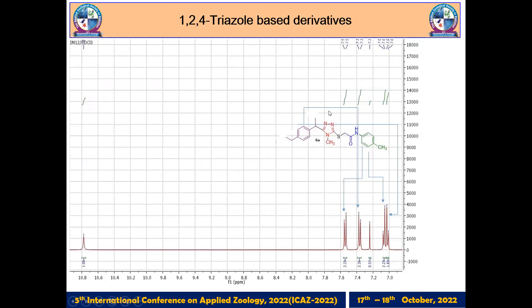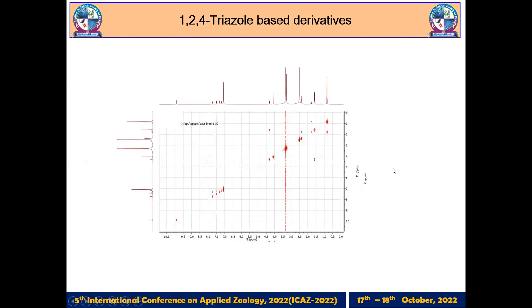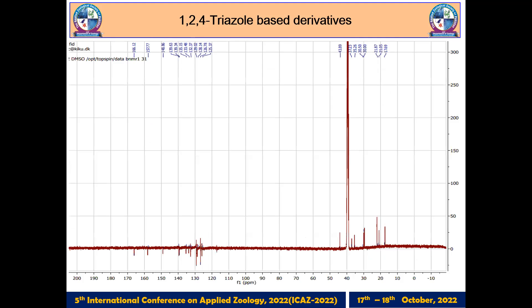Formation of the compounds was confirmed by their spectral data analysis. This is the proton NMR of the compound — the aromatic region — and you can clearly see different peaks for the aromatic protons. This is the ¹³C NMR of the compound.